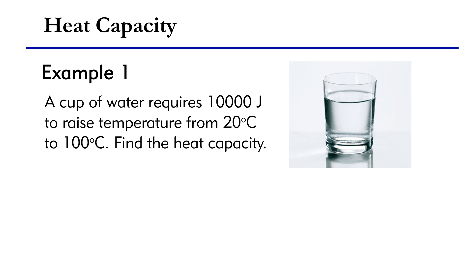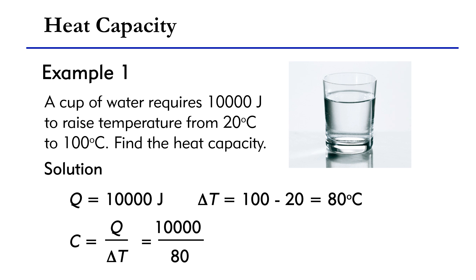Consider a cup of water. Suppose it requires 10,000 Joules of energy to raise the temperature from 20 degree Celsius to 100 degree Celsius. Find the heat capacity. The energy transferred Q is 10,000 Joules. The change in temperature delta T is 100 minus 20 equals 80 degree Celsius. The heat capacity of the cup of water is 10,000 Joules divided by 80 and the result is 125 Joules per degree Celsius.